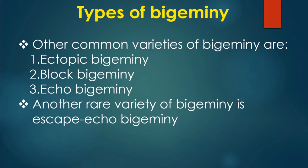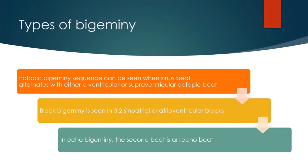Other common varieties of bigeminy are: 1) ectopic bigeminy, 2) block bigeminy, and 3) echo bigeminy. Another rare variety is escape echo bigeminy. Ectopic bigeminy occurs when a sinus beat alternates with either a ventricular or supraventricular ectopic beat. Block bigeminy is seen in 3:2 sinoatrial or atrioventricular blocks. In echo bigeminy, the second beat is an echo beat.